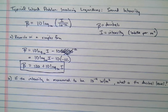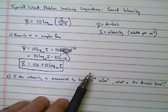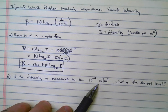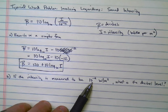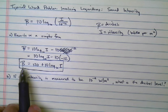Now, if the intensity happens to be measured to be 10 to the negative 4 watts per square meter, what's the decibel level? So in other words, if I plugged in 10 to the negative 4th for I, what would I get for B?